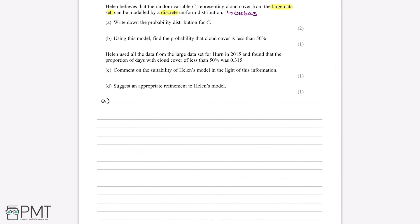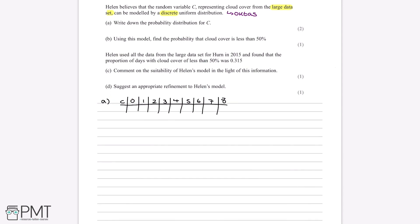Since the random variable C can only be an integer from zero to eight, we can draw a table where lowercase c takes values between zero and eight. Because Helen believes C follows a discrete uniform distribution, the probability of C being equal to any one of these nine values must be equal — for example, the probability of C equals zero must be the same as the probability of C equals four. Therefore, with nine possible values, the probability of each must be one ninth.